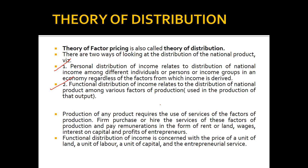Number two is functional distribution of income, which relates to the distribution of national product among various factors of production used in producing that output. Production of any product requires the use of services of factors of production, and firms purchase or hire those services and pay remuneration — rent for land, wages for labor, interest on capital, and profit for entrepreneurs.